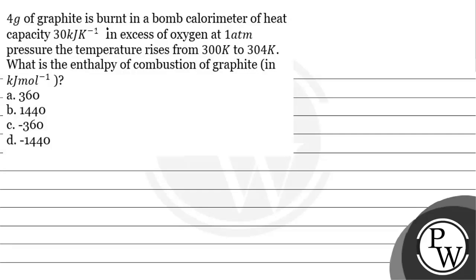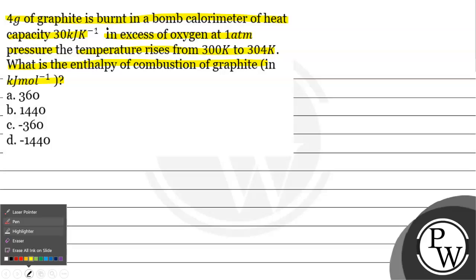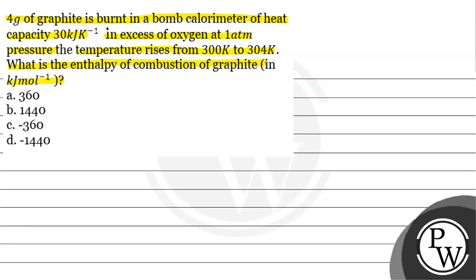Let's read this question. 4 grams of graphite is burnt in a bomb calorimeter of heat capacity 30 kilojoule per kelvin in excess of oxygen at 1 atm pressure. The temperature rises from 300 kelvin to 304 kelvin. What is the enthalpy of combustion of graphite in kilojoule per mole? Option A is 360, Option B is 10440, Option C is minus 360, Option D is minus 1440.